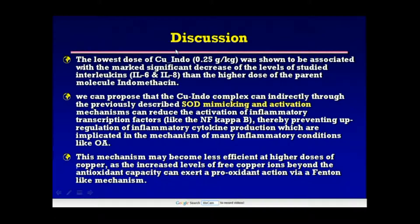In discussion, the lowest dose of copper indomethacin (0.25 g/kg) was associated with a markedly significant decrease in the levels of interleukin-6 and interleukin-8, greater than the higher dose of the parent molecule indomethacin. We propose that the copper indomethacin complex can indirectly, through superoxide dismutase mimicking and activation mechanisms, reduce the activation of inflammatory transcription factors like NF-κB, thereby preventing upregulation of inflammatory cytokine production implicated in osteoarthritis. This mechanism may become less efficient at higher doses of copper, as increased free copper ions beyond antioxidant capacity can exert a pro-oxidant action via a Fenton-like mechanism.